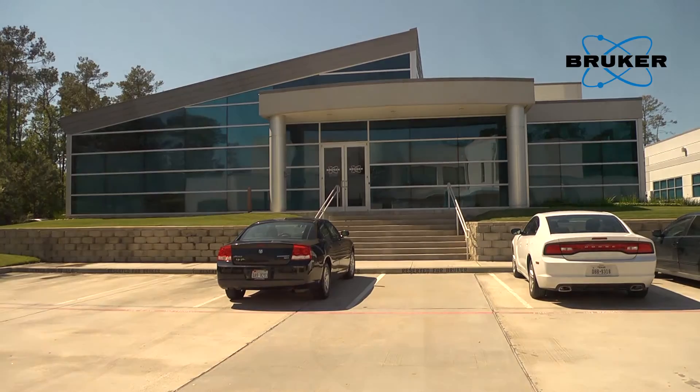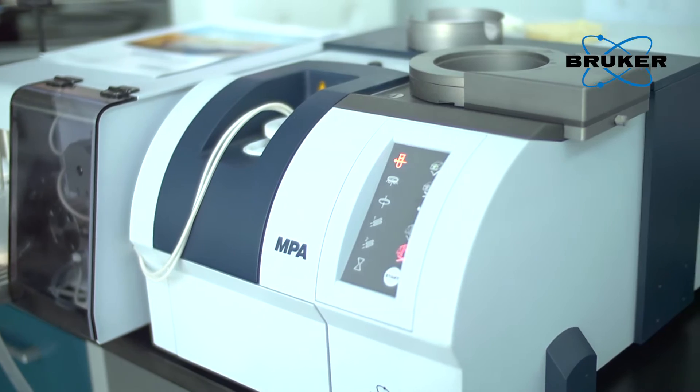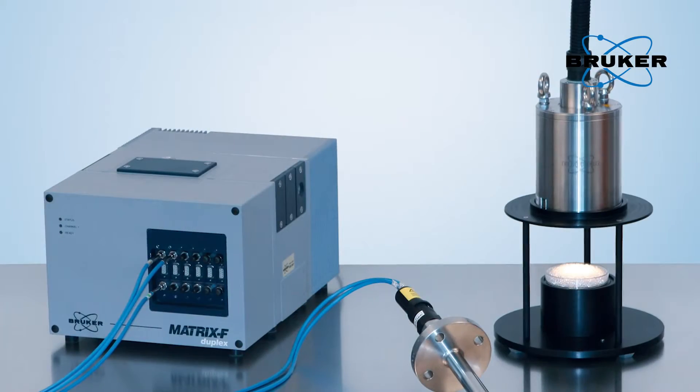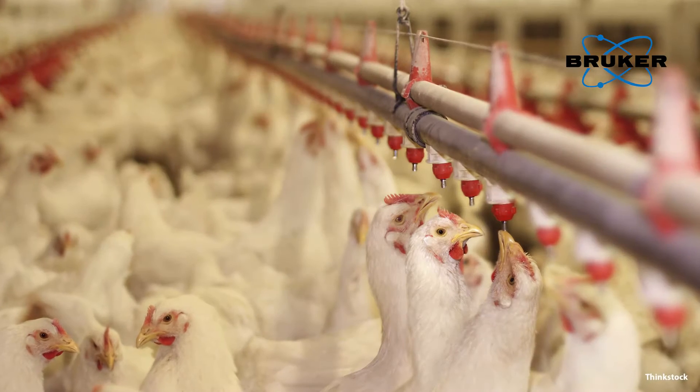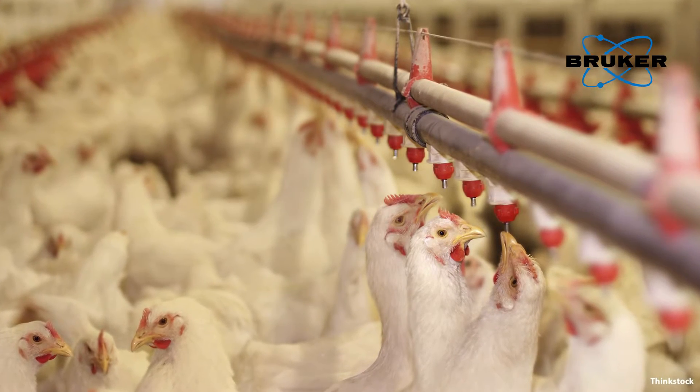Bruker's FT-NIR product line includes the Tango, the MPA, and Matrix I spectrometers for lab and at-line applications, as well as the Matrix F series for process control.